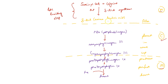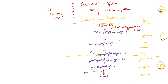The delta-ALA formed here then enters the cytoplasm, and two molecules of delta-ALA condense to form porphobilinogen. This occurs in the presence of delta-ALA dehydratase enzyme. It is a zinc-containing enzyme and is inhibited by lead.